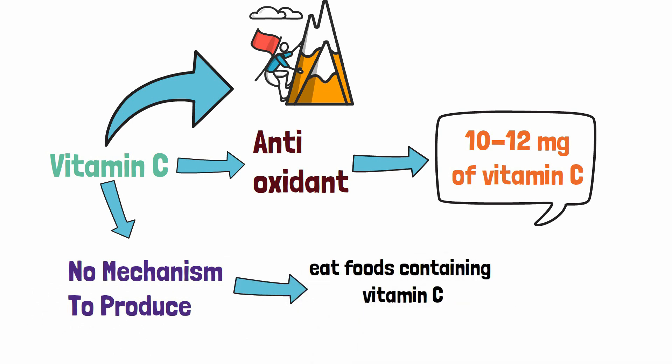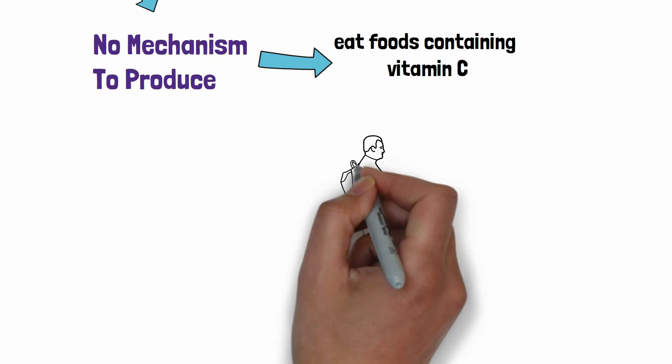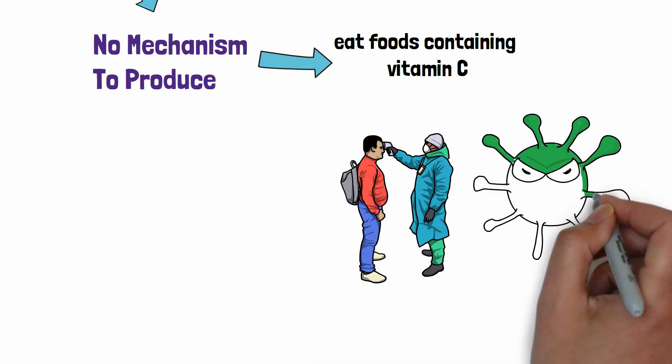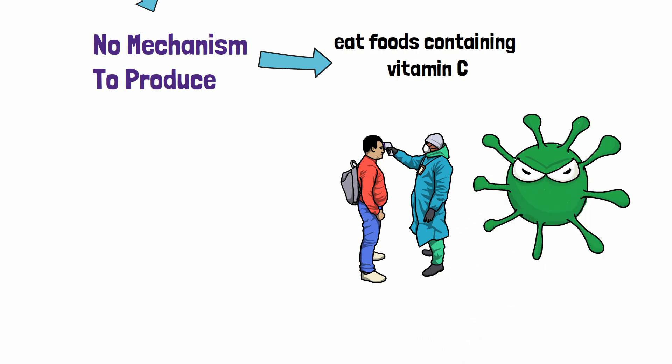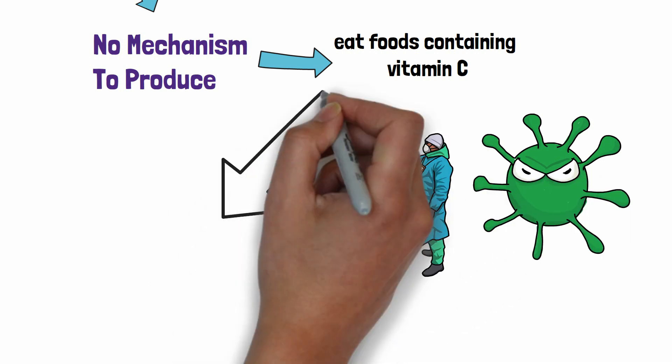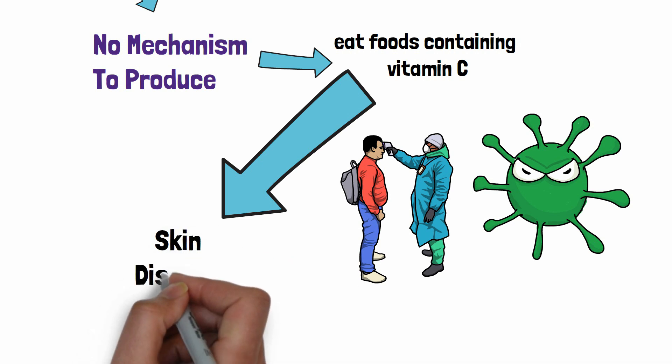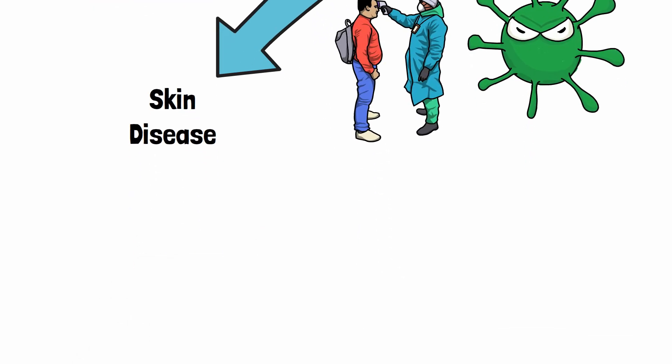So we have to eat foods containing vitamin C. And living in the COVID-19 era, you cannot but know how important the role of vitamin C is against viral infections. But vitamin C has other surprising benefits too. For example, it is also very effective against skin diseases.